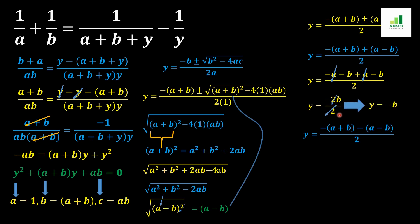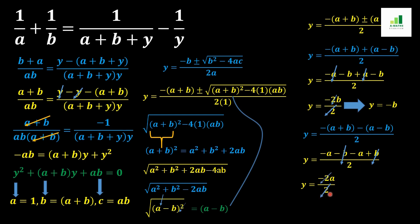For the second value: we open the bracket to get y = (-a - b - (-(a-b))) / 2, which gives -a - b - (-a + b) = -a - b + a - b. The -b and +b cancel and -a and +a... wait, we get -2a/2. Both twos cancel, giving the second value y = -a.